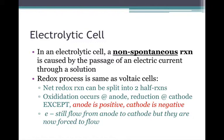It's a non-spontaneous reaction, and since it's not going to happen by itself, it has to be forced. It's caused by the passage of electric current through the solution. The redox process is the same as voltaic cells. The net redox reaction can still be split into two half-reactions. The oxidation occurs at the anode, reduction at the cathode.